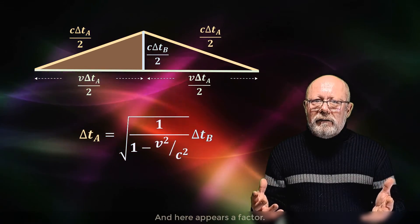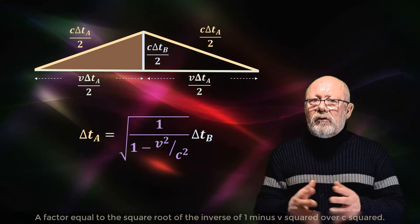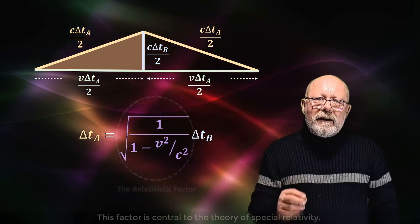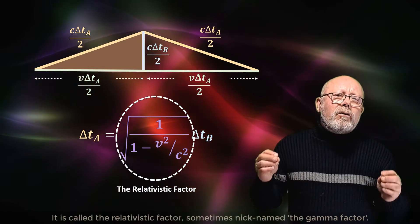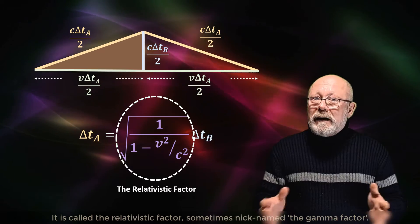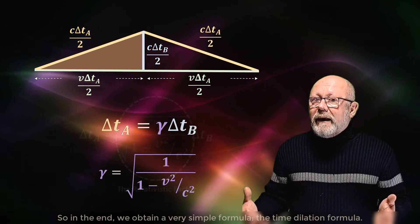We get this. And here appears a factor. A factor equal to the square root of the inverse of 1 minus V squared over c squared. This factor is central to the theory of special relativity. It is called the relativistic factor, sometimes nicknamed the gamma factor.